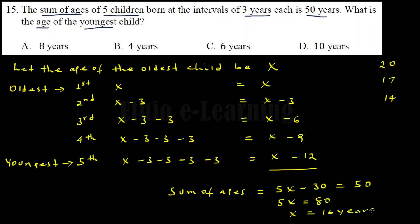So x equals 16. The age of the youngest child is equal to x minus 12, which is 16 minus 12, and that is equal to 4. The age of the youngest child is 4 years.